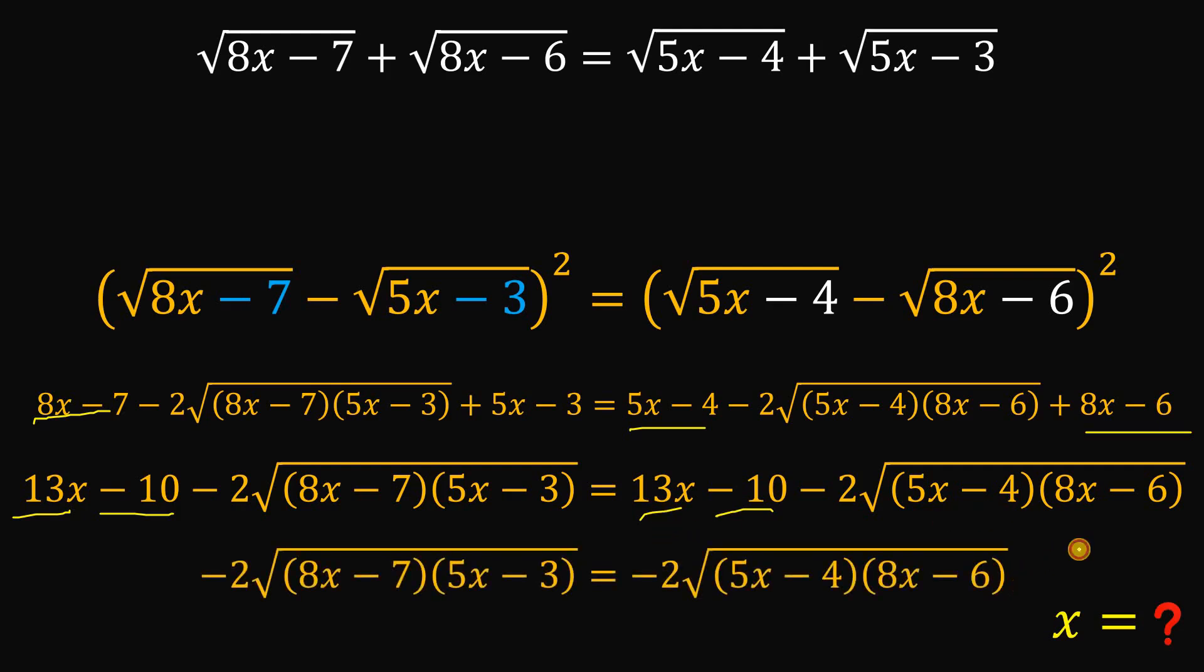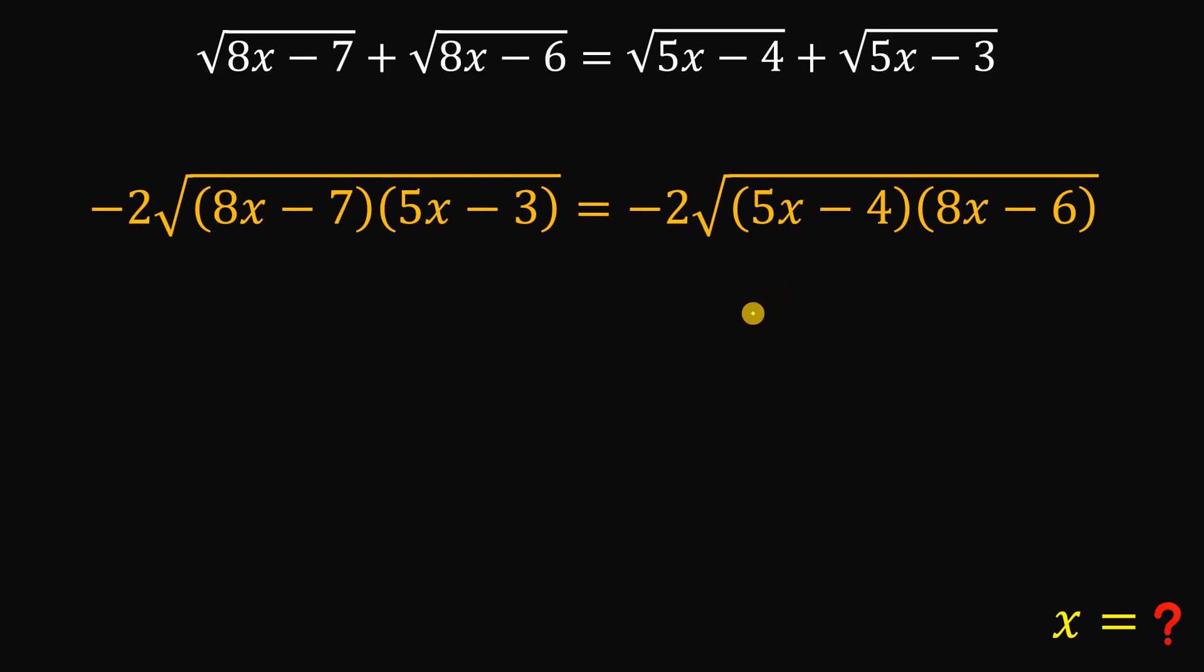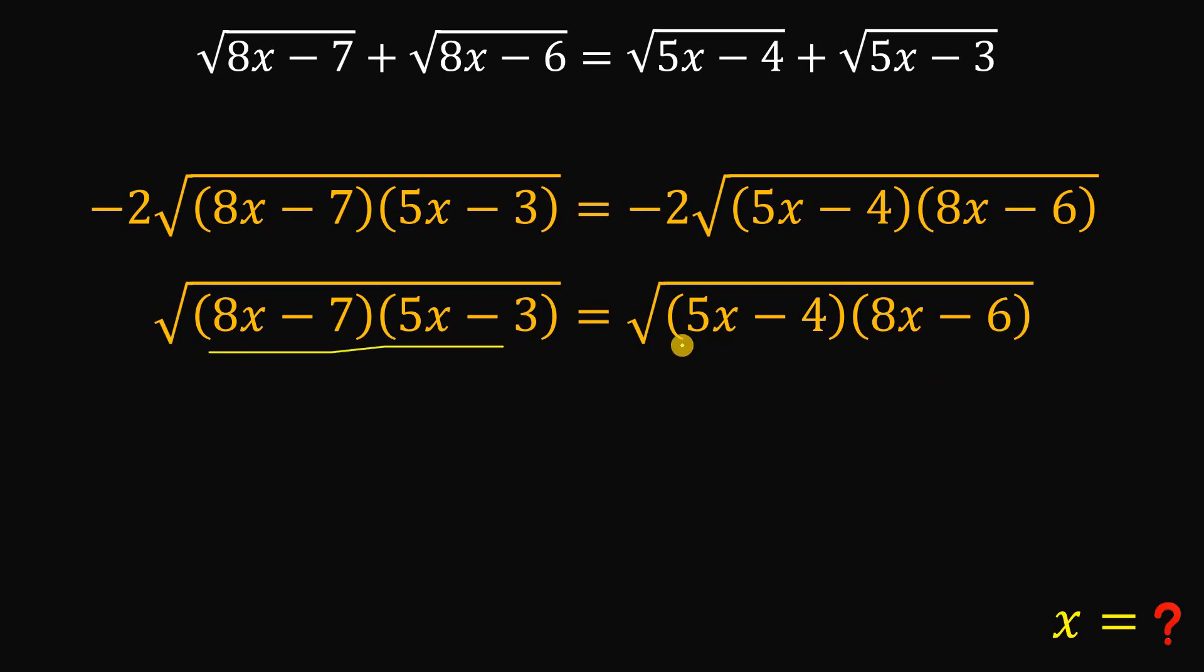Now, let's focus on this result. What we're going to do here is to divide both sides by negative 2. So this will give us square root of 8x minus 7 times 5x minus 3 equals square root of 5x minus 4 times 8x minus 6. And if we square on both sides, we can say that the expression inside of this square root are the same. So we can equate them.